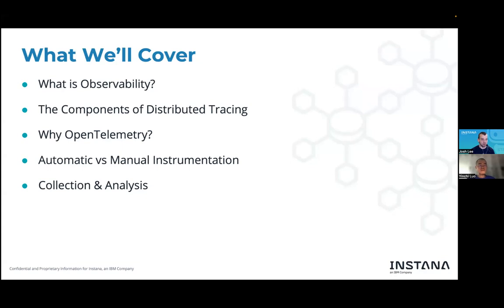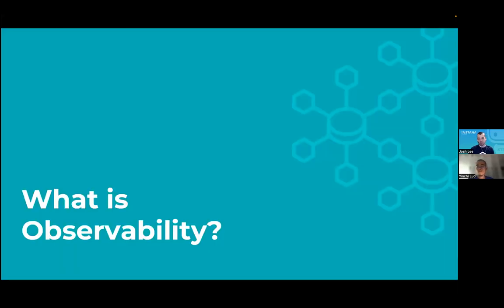We'll cover a few topics: we'll talk about observability broadly and how it differs from traditional monitoring and APM, the components of distributed tracing and how it's a different challenge than what we may be used to from monoliths. We'll introduce the OpenTelemetry project and its benefits, and talk about why you might want to use it together with something like Instana. We'll also talk about the different ways of instrumenting your services for tracing, including automatic and manual instrumentation methods.